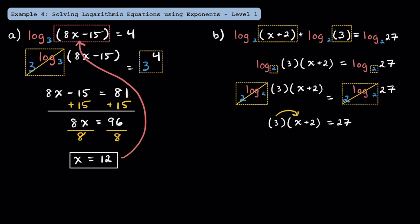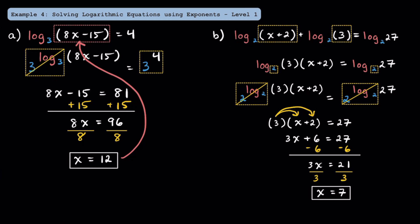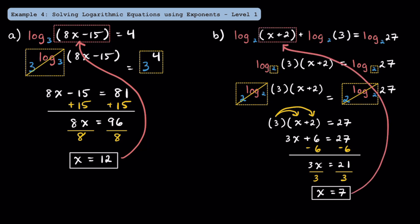Distributing the 3, we get 3x plus 6 is equal to 27. Subtracting 6 from both sides, we're left with 3x is equal to 21, and dividing both sides by 3, we get x is equal to 7. Just to make sure we don't have any extraneous solutions, plugging in 7 gives us a positive value, so we're good to go.